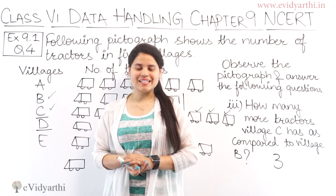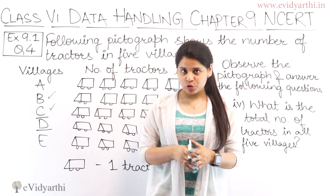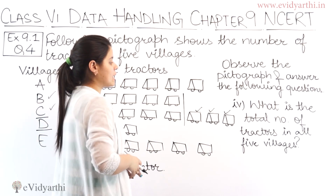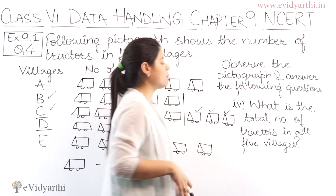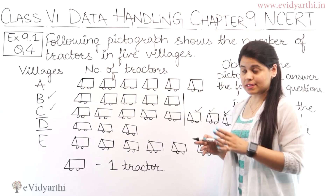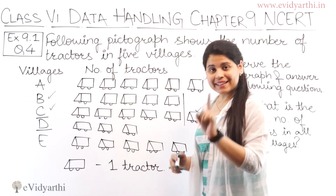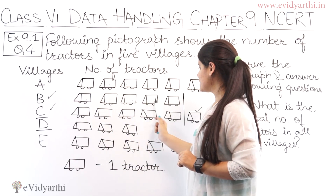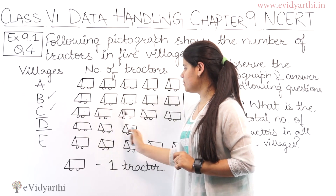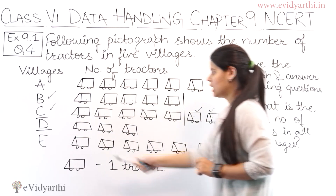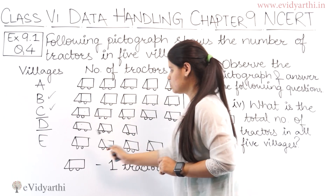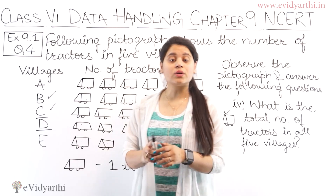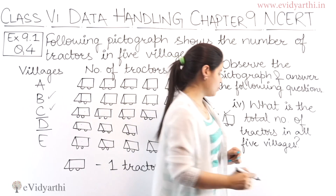Now coming to the fourth part: what is the total number of tractors in all five villages? Let's count all the tractor symbols: 1, 2, 3, 4, 5, 6, 7, 8, 9, 10, 11, 12, 13, 14, 15, 16, 17, 18, 19, 20, 21, 22, 23, 24, 25, 26, 27, 28. So there are a total of 28 tractors.